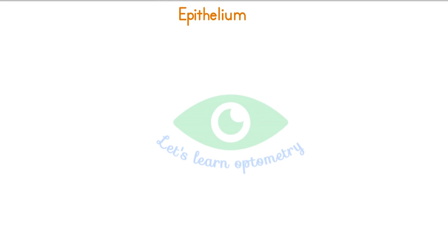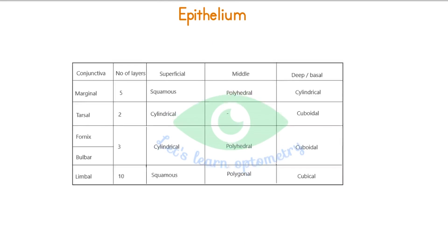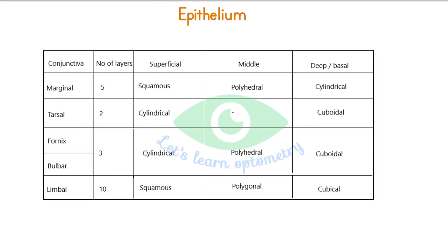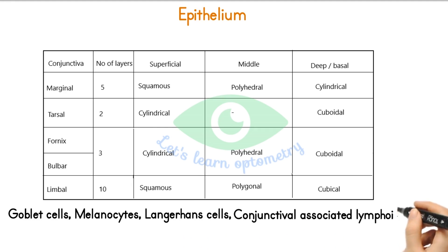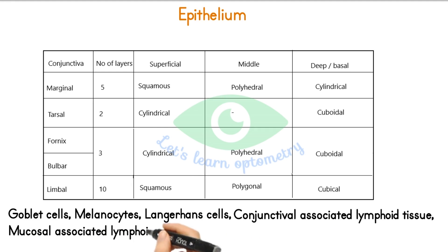The layer of epithelial cells in the conjunctiva varies from region to region. The number of layers at each region of conjunctiva and its corresponding cell types are given in a table. Cells present in the epithelium include goblet cells, melanocytes, Langerhans cells, conjunctival-associated lymphoid tissue, and mucosal-associated lymphoid tissue.